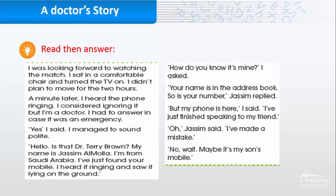How do you know it's mine? I asked. Your name is in the address book, so is your number, Jassim replied. But my phone is here, I said. I have just finished speaking to my friend. Oh, Jassim said, I have made a mistake. No, wait. Maybe it's my son's mobile.